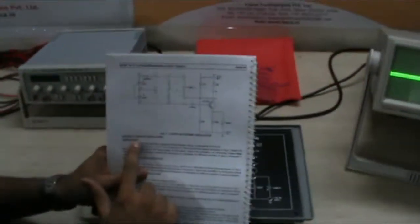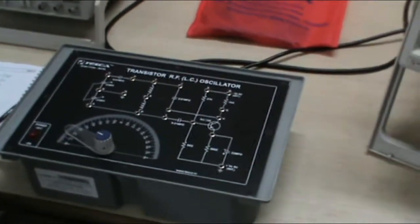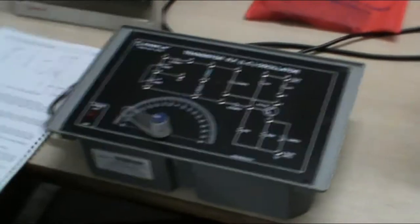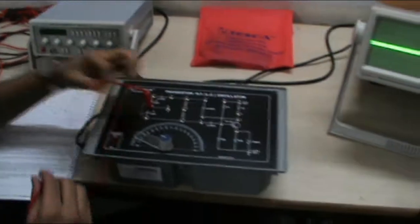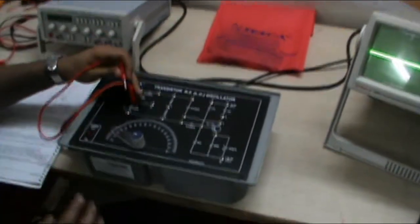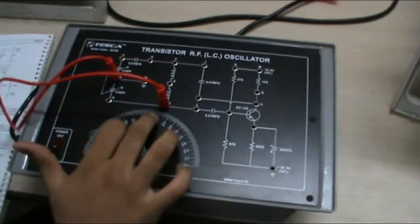Now, first of all, let me take you to the first experiment which is Hartley Oscillator. The connection for the first experiment, as it has clearly given in the manual, we have to connect B to D. This is the B point. We have to connect B to D point.